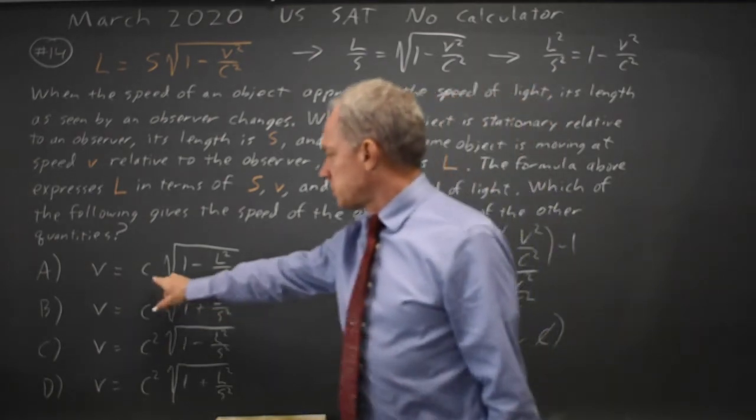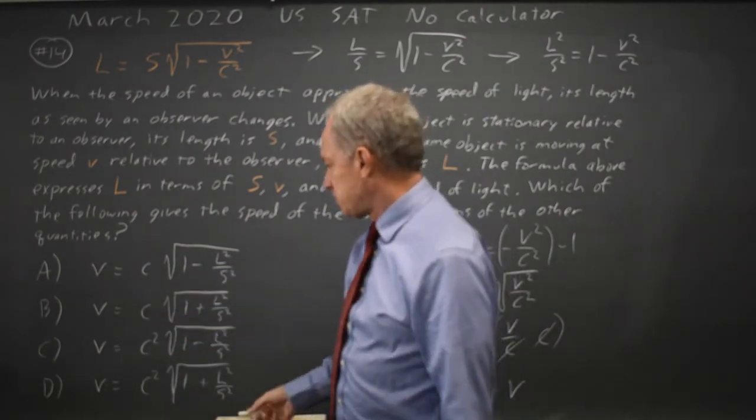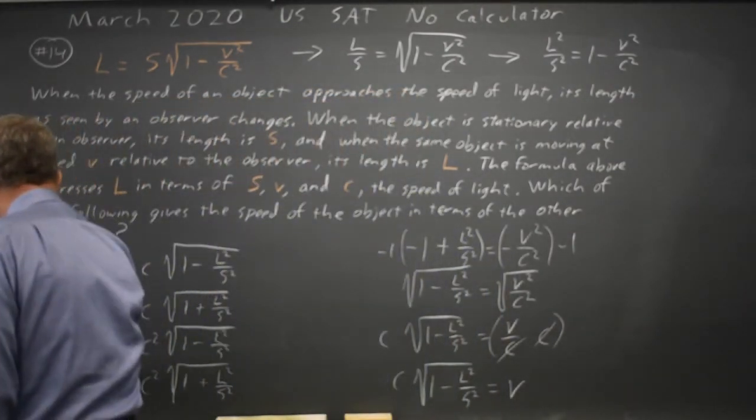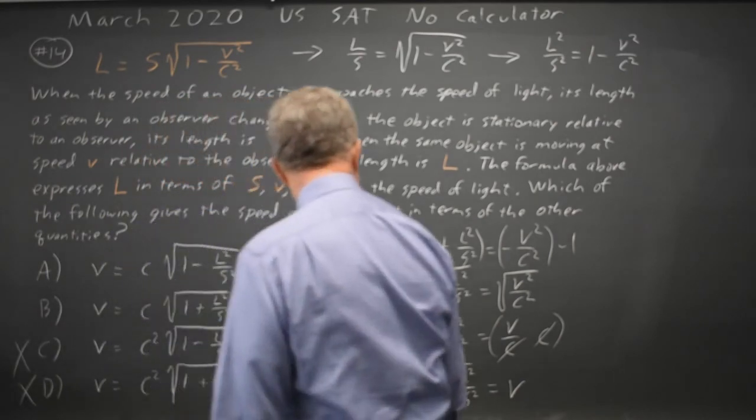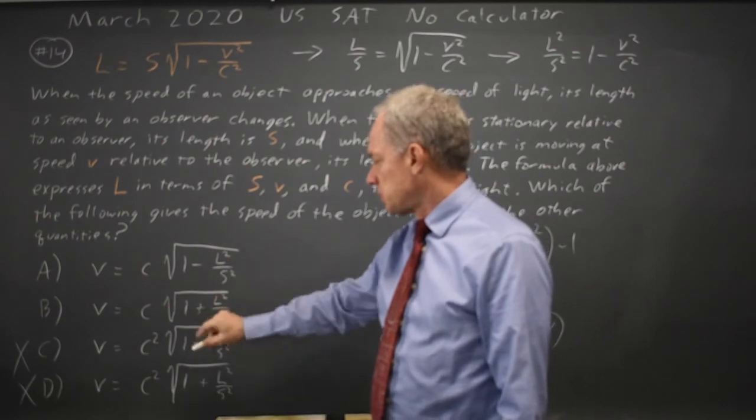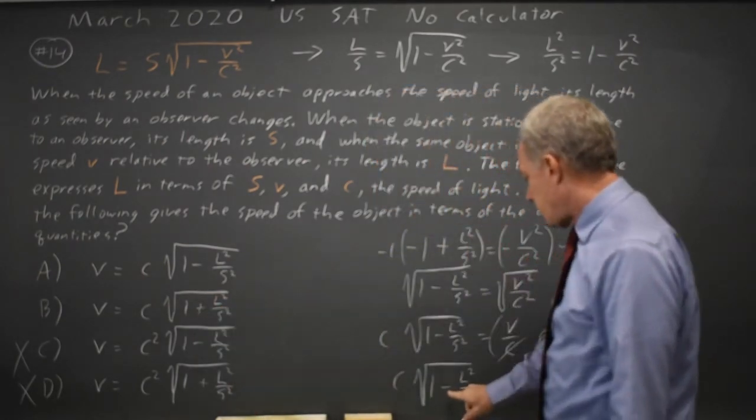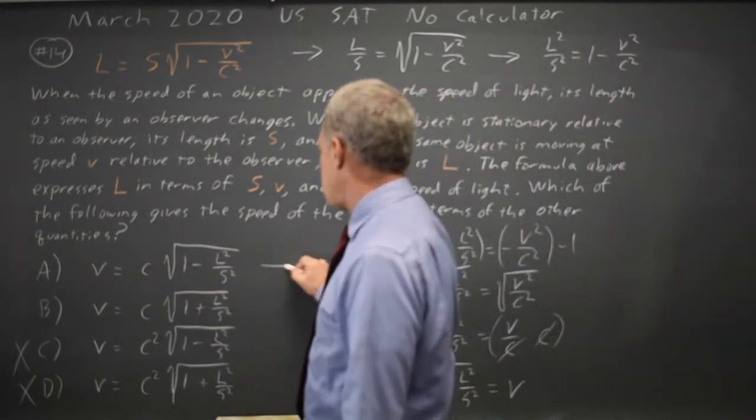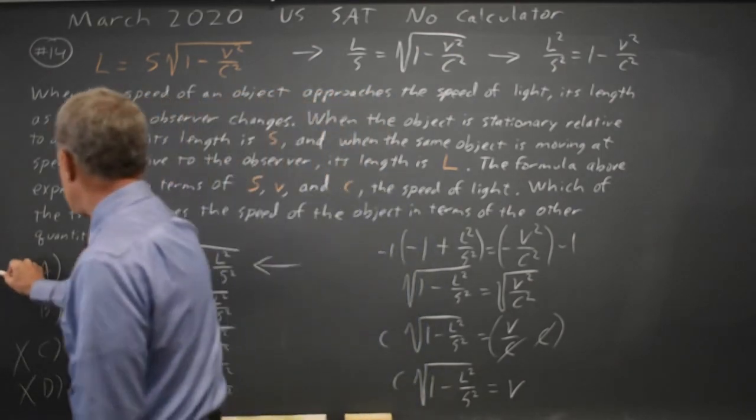Choices A and B just have C to the first. C and D have C squared. So C and D are wrong because it's only C to the first. And the other question we have is, is it minus L squared or S squared or plus L squared or S squared? And my answer has minus so that would be choice A and not choice B.